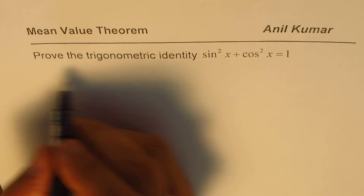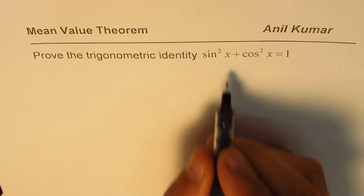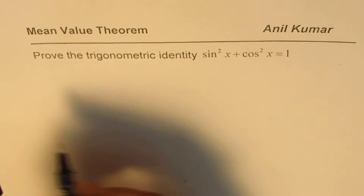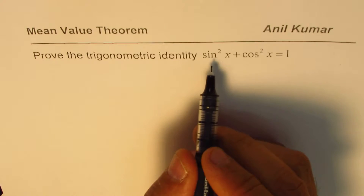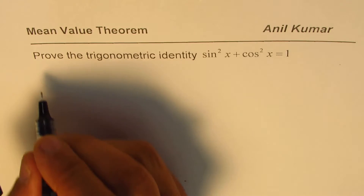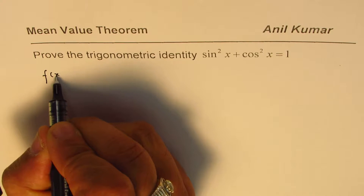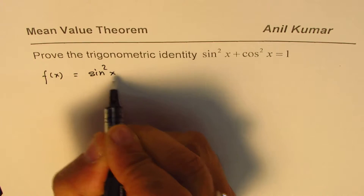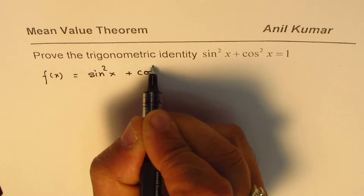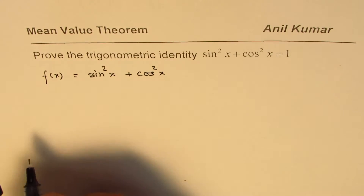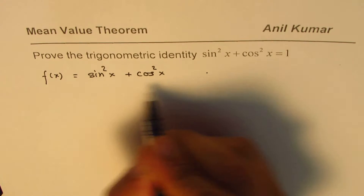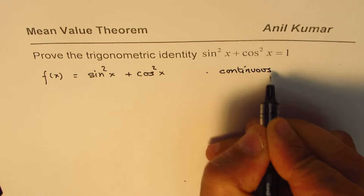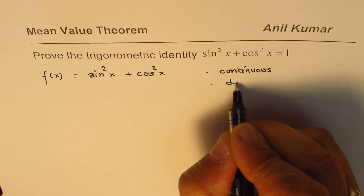As you know, sin x and cos x are continuous functions, so their combination is also continuous. And second, they are both differentiable. So let's define a function f of x, which equals sin squared x plus cos squared x. This function is continuous and differentiable.